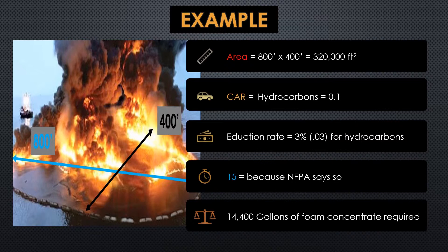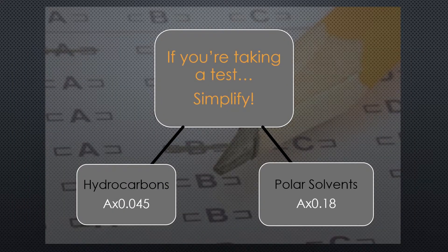If I don't have 14,400 gallons of foam concentrate, don't even try. You're just going to waste it — it's going to burn off, the fuel is going to reignite, and you've done nothing with your foam. So just protect your exposures. Wait for the cavalry to arrive with more foam and concentrate on protecting everything around that until you have enough foam to get started. That's why we're doing all of this — to see if we want to attack this flammable liquids fire or not. If you have 14,400 gallons, go for it. If you don't, just protect your exposures.